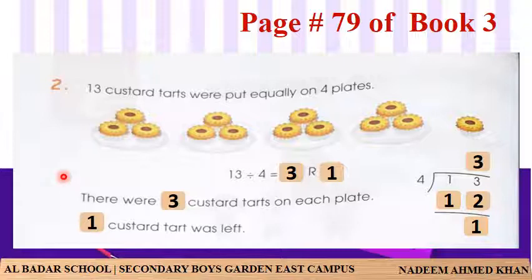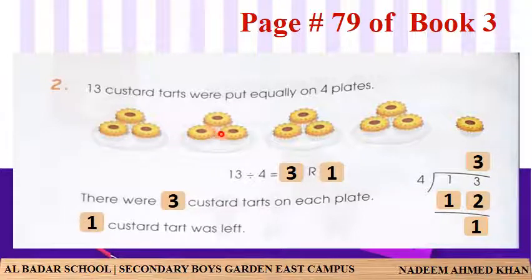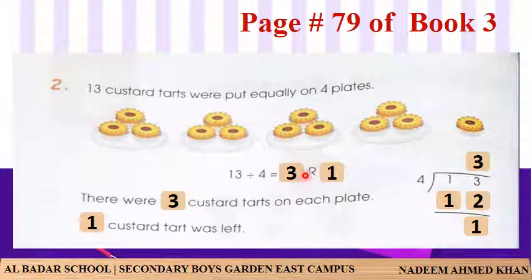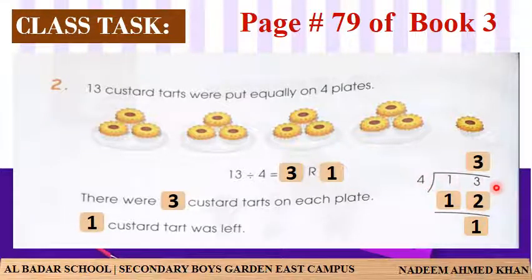Page 79، book 3، question number 2: 13 custard tarts کو 4 plates پر equally رکھا گیا۔ custard tarts count کریں: 1 سے 13۔ plates count کریں: 4۔ 13 divided by 4 is equal to blank R blank۔ 4 کے table میں 13 قریبی نمبر 12 ہے (4×3=12)، blank میں 3 اور 12 لکھیں۔